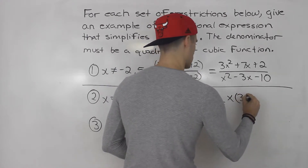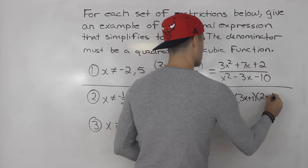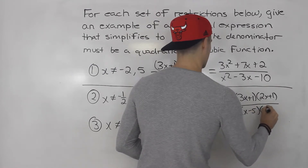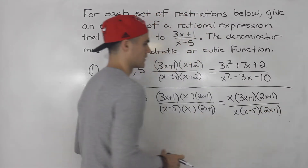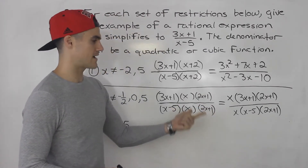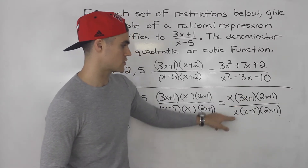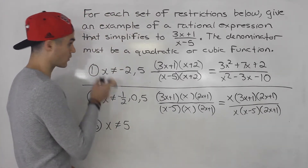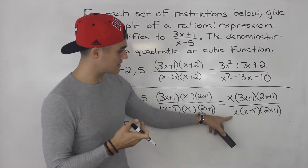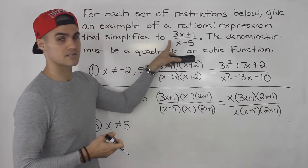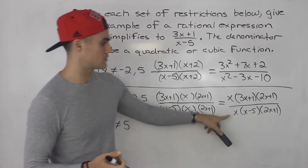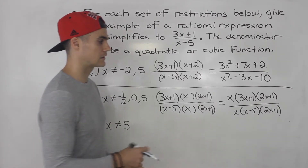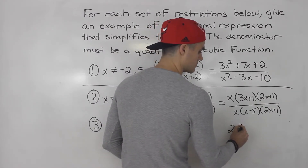So the expression is (3x+1)(2x+1) all over x(x-5)(2x+1). If you're given this and asked to simplify and state restrictions: x cannot equal 0, x cannot equal 5, x cannot equal negative one half — which is what is required. When you simplify, the x's cancel out, the (2x+1)'s cancel out, and you're left with the simplified expression. Notice the denominator is a cubic function — the leading term when expanded would be 2x cubed.